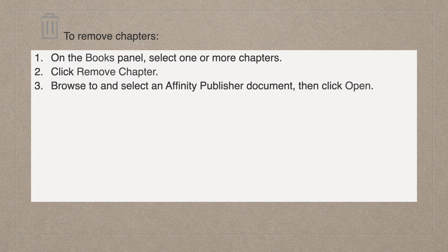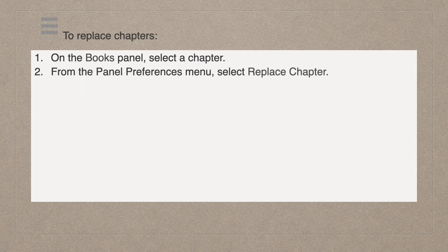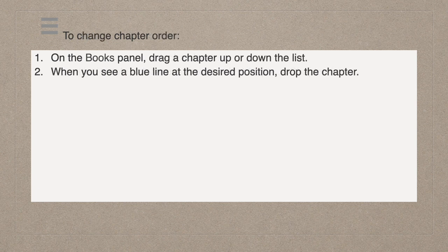To remove chapters: on the Books panel, select one or more chapters and click Remove Chapter. To replace chapters: on the Books panel, select a chapter, then from the panel preferences menu select Replace Chapter, browse to and select an Affinity Publisher document, then click Open. To change chapter order: on the Books panel, drag a chapter up or down the list. When you see a blue line at the desired position, drop the chapter.